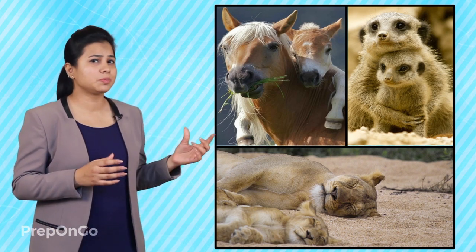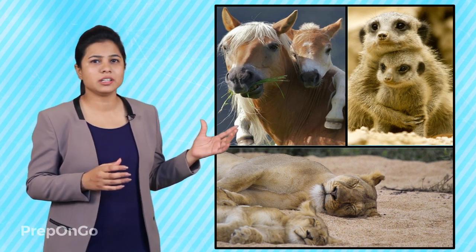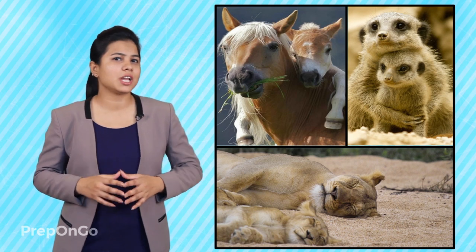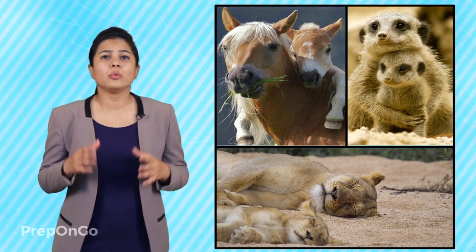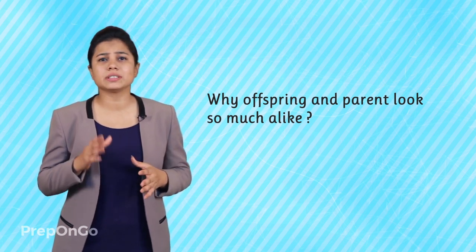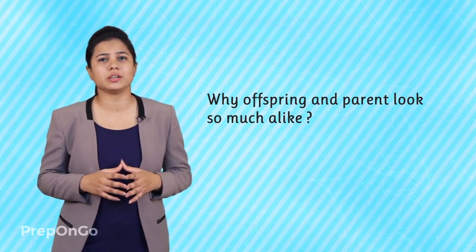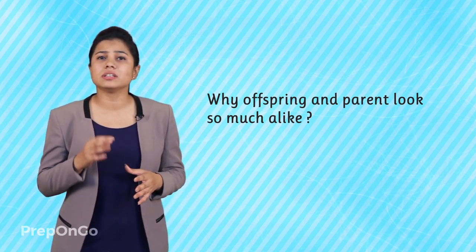Now, if you look at this picture — the animal with its kid — don't they look almost alike? We can say that the kids are the tiny forms of the parents. So the question arises: how does this happen? Why do the offspring and the parents look so much alike? We will try to answer these questions in this chapter.